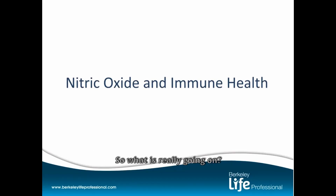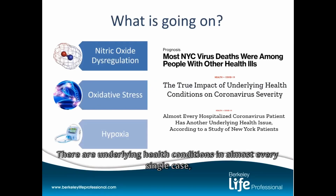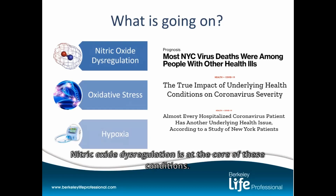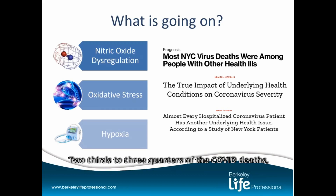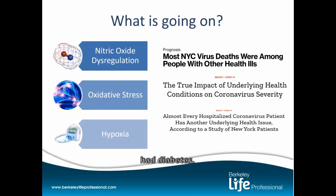So what is really going on? There are underlying health conditions in almost every single case of COVID. Nitric oxide dysregulation is at the core of these conditions. Two-thirds to three-quarters of the COVID deaths had hypertension or cardiovascular disease, and a third of the COVID deaths had diabetes.